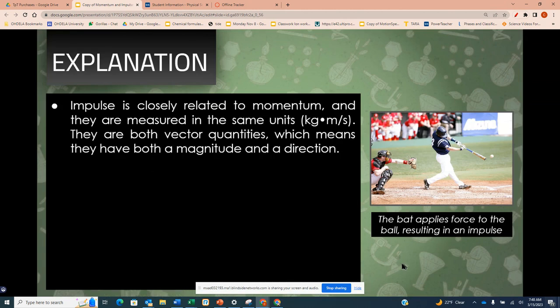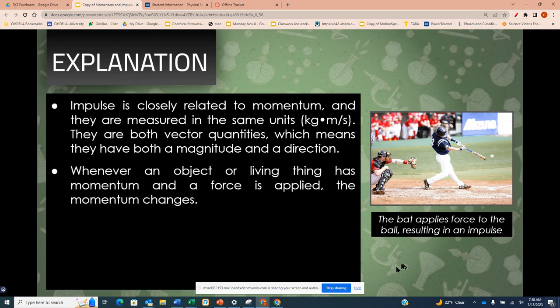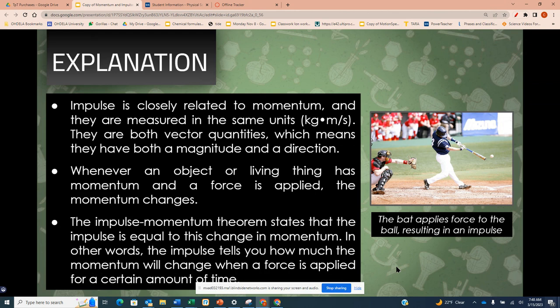The bat applies a force to the ball, resulting in an impulse. Impulse is closely related to momentum and there is a measure of units of kilogram times meters per second. They are both vector quantities, which means that they both have magnitude and direction. Whenever an object or living thing has momentum, the force is applied, the momentum changes. Impulse-momentum theory states that impulse is equal to this change in momentum. In other words, the impulse tells you how much momentum will change when the force is applied for a certain amount of time.